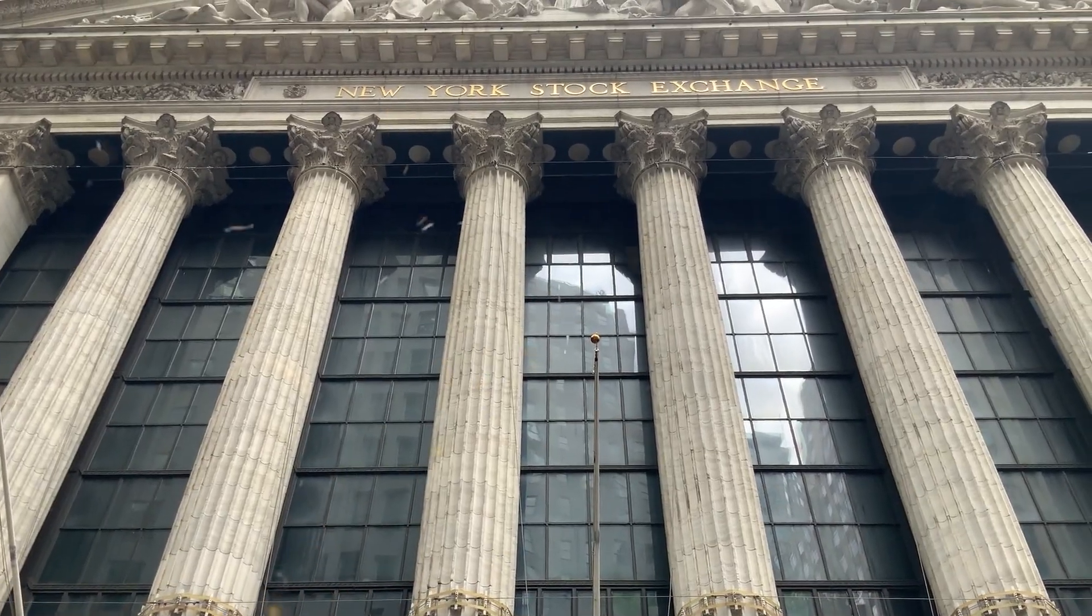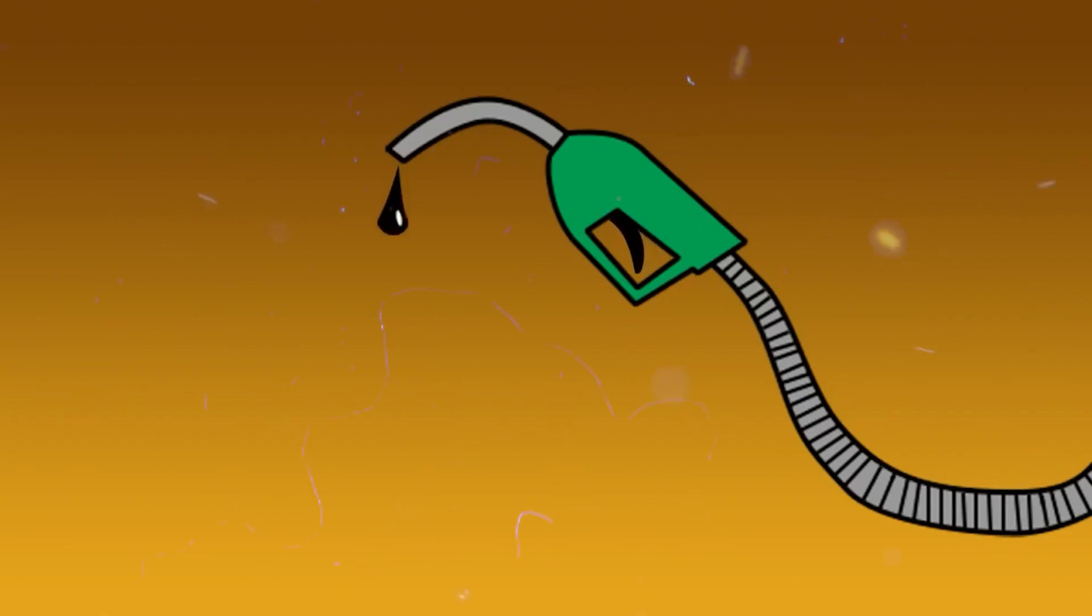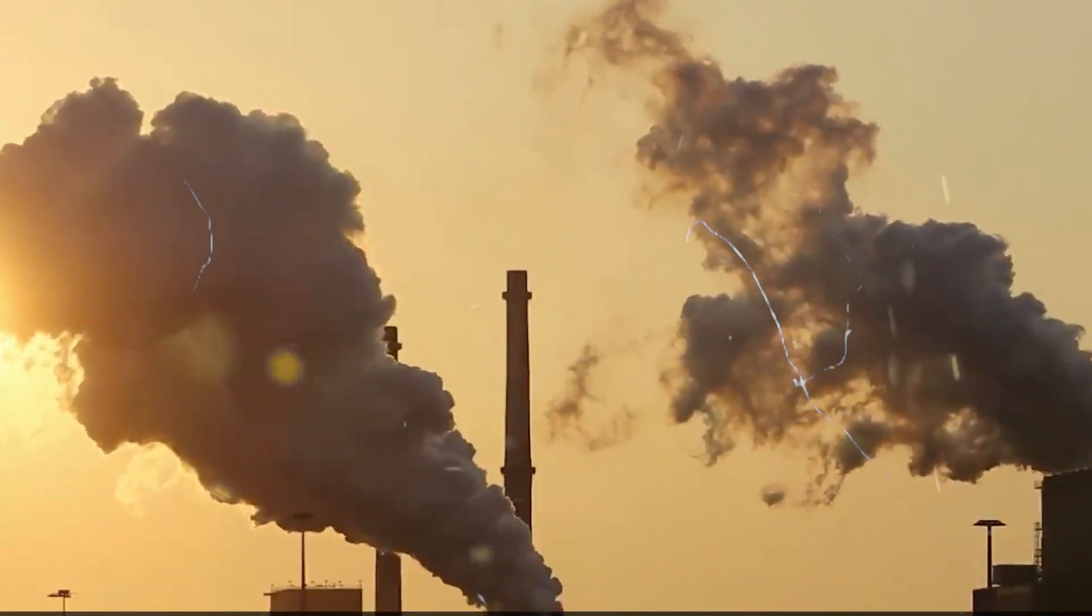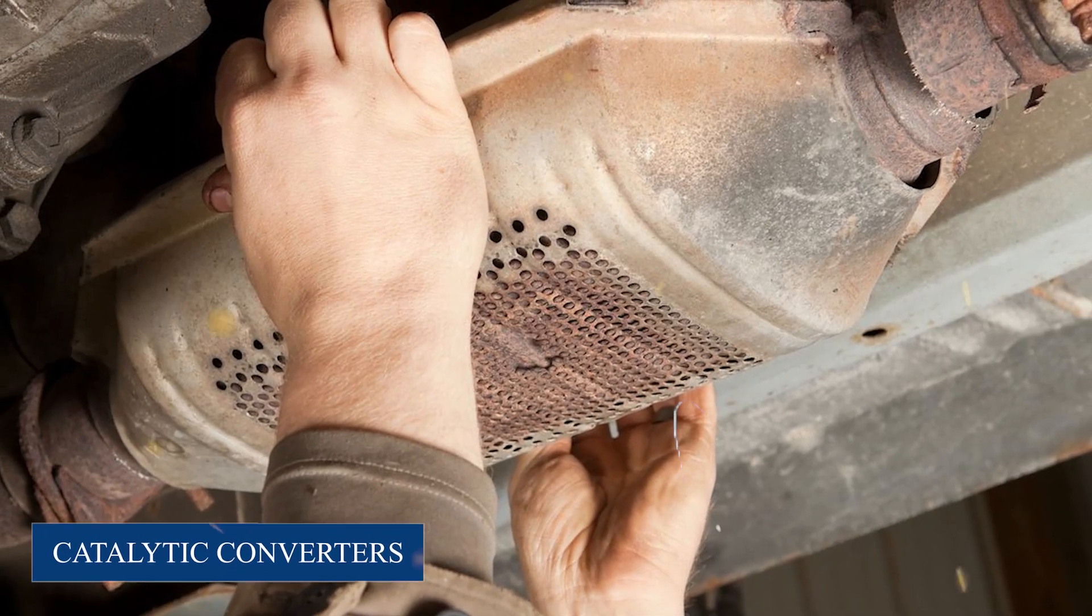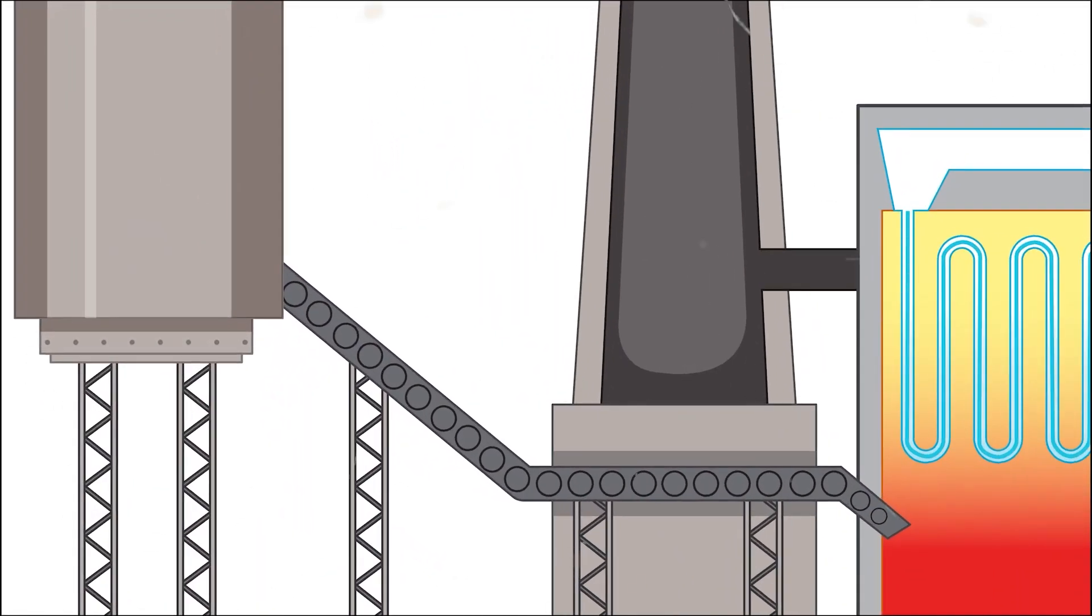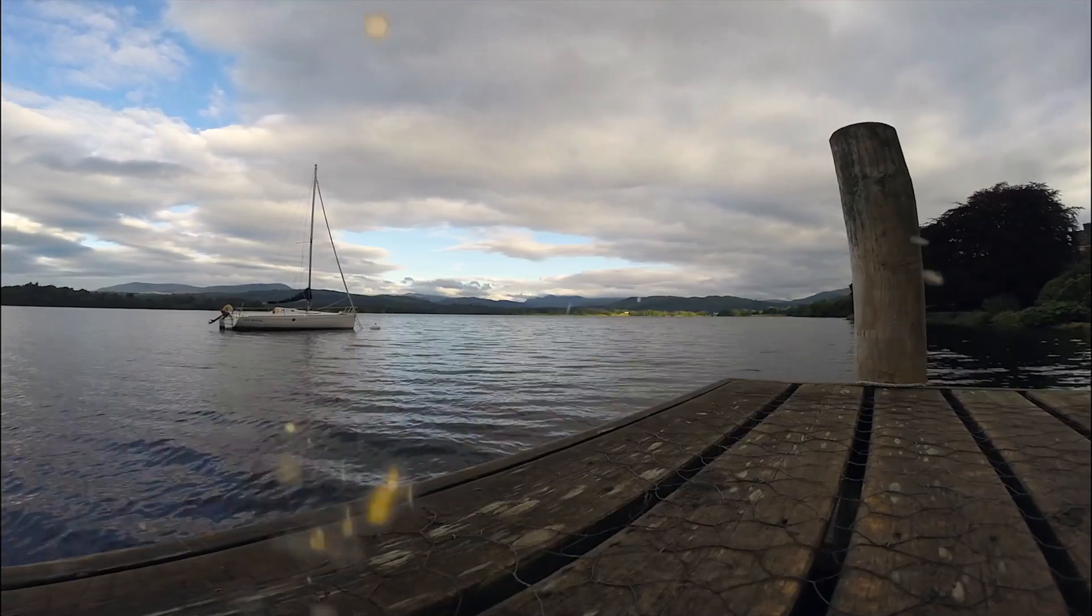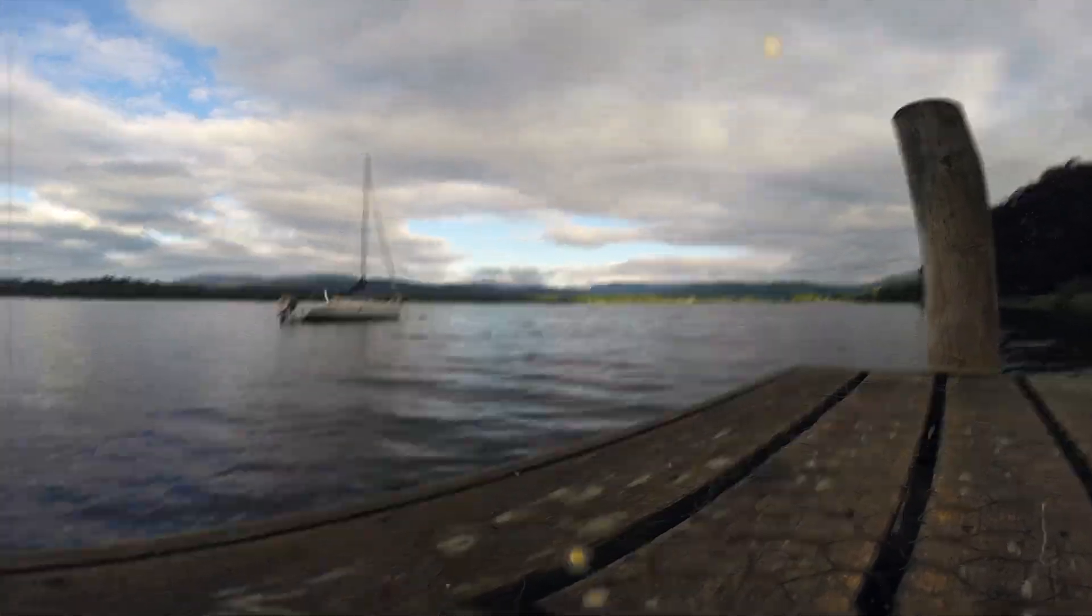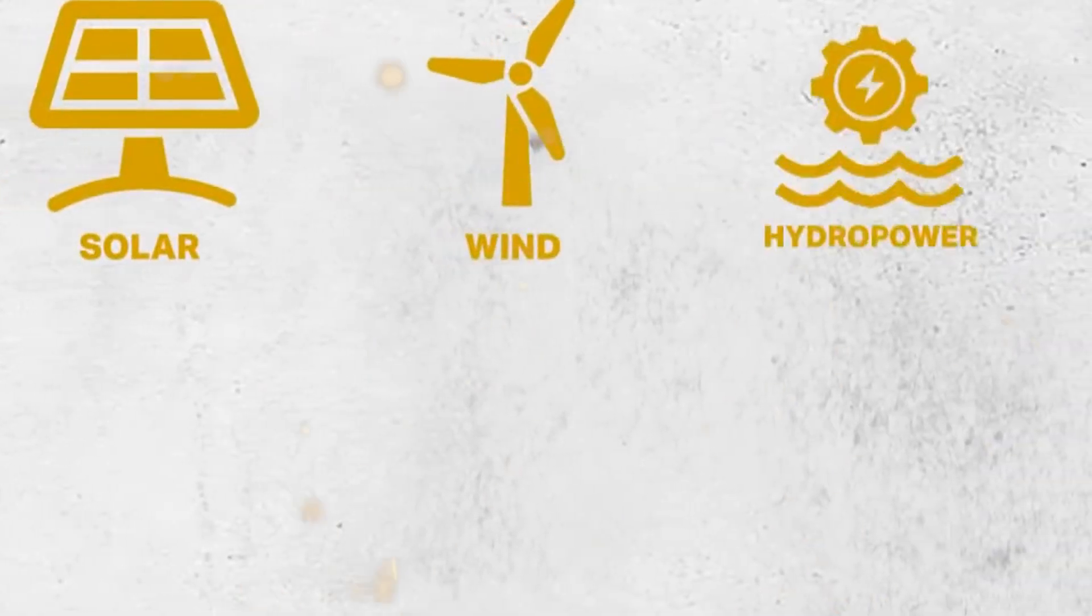Different technologies and measures are being used by governments and refineries to lessen the damage that making fuel does to the earth. To cut down on pollution and greenhouse gas emissions, this includes spending money on refining methods that are cleaner and more efficient, like catalytic converters and sulfur removal units. To power refineries and cut down on their use of fossil fuels, there is also more focus on making them more energy efficient and switching to green energy sources. At the local, national, and foreign levels, rules and laws are also being put in place to cut down on emissions and promote environmental sustainability.